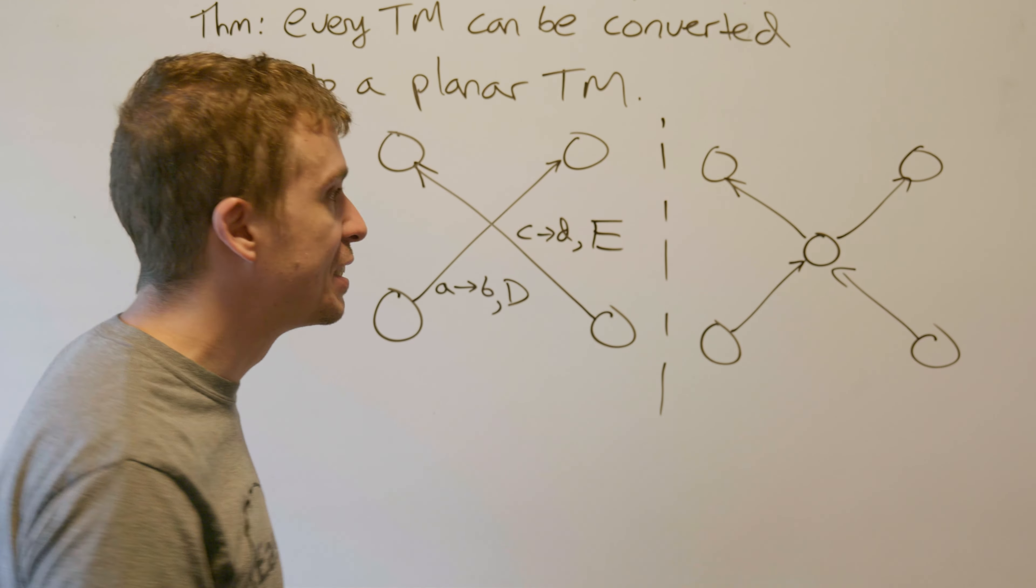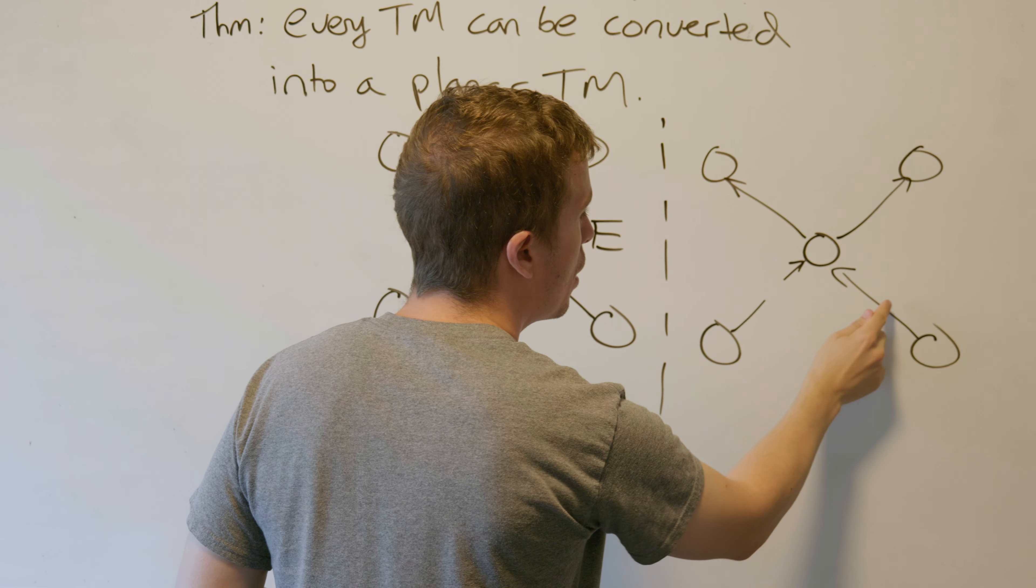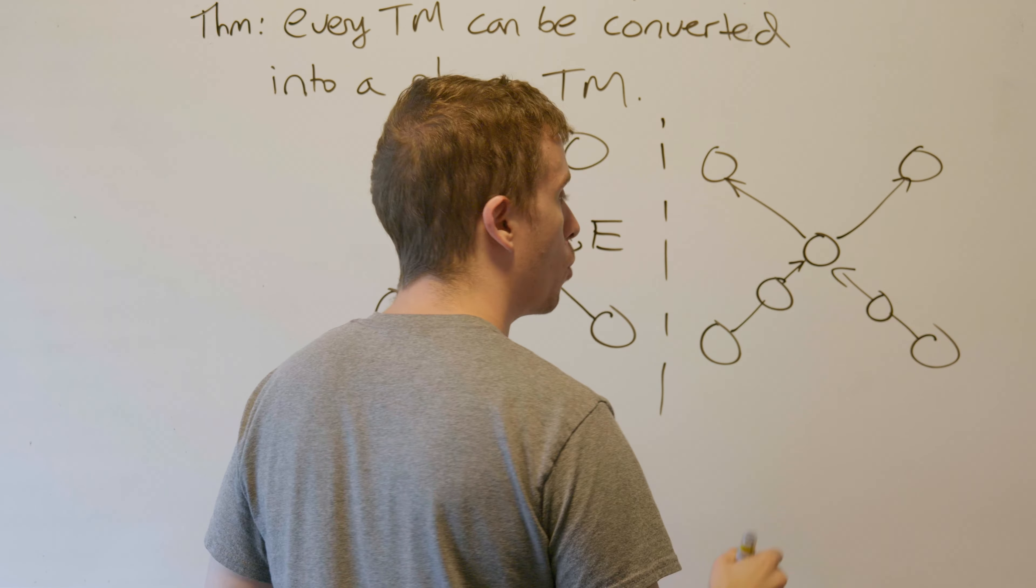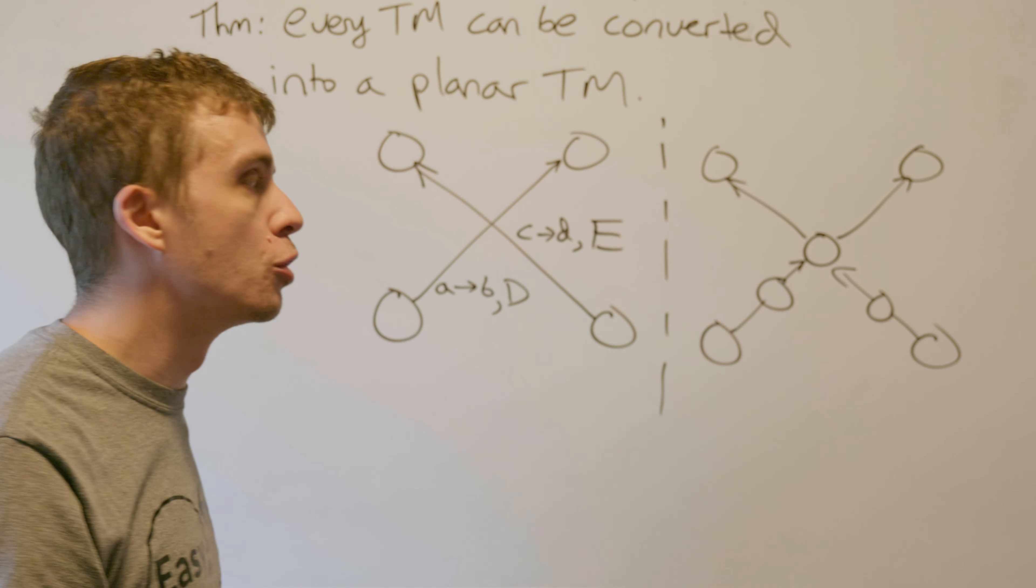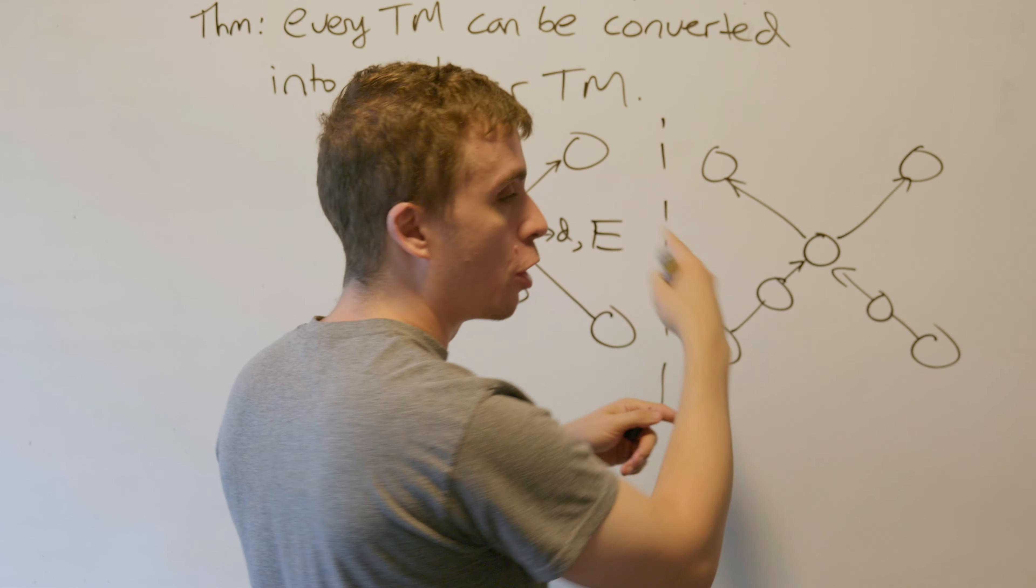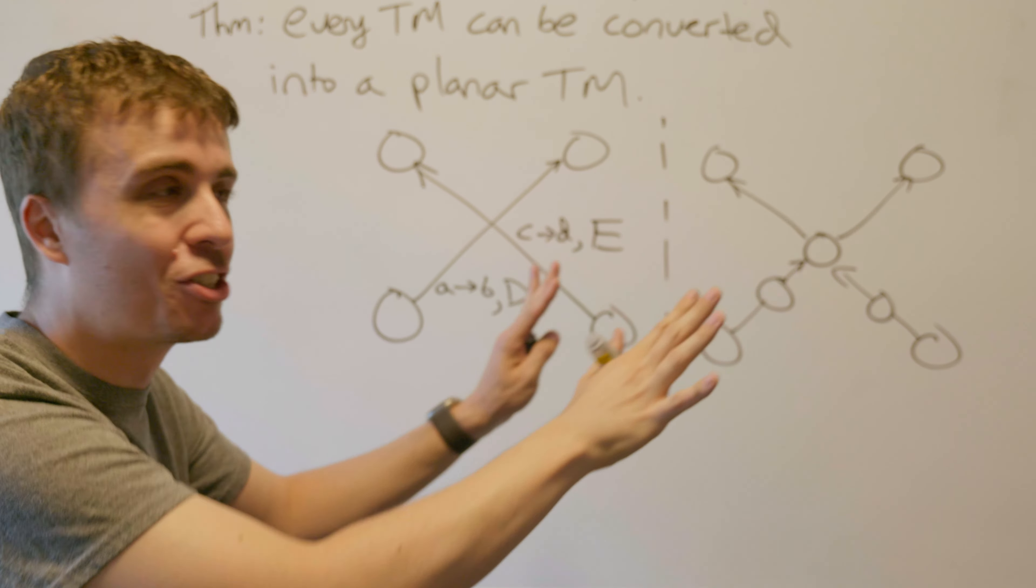How we're going to fix that is by putting another state in the middle of the beginning transition here. We're going to put a state in the middle of these two original transitions. So we're currently at an odd number. But of course, it matters what we actually put on the transition.